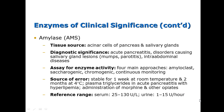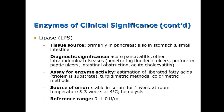Amylase is found in the pancreas and salivary glands, and is found very elevated in pancreatitis or salivary gland lesions. The reference range is 25 to 130, and it is very specific for pancreatitis. Another pancreatitis enzyme is lipase, found primarily in the pancreas, and increased in acute pancreatitis or intra-abdominal diseases such as ulcers. Its reference range is 0 to 1, and some physicians believe lipase stays elevated longer after pancreatitis than amylase does.